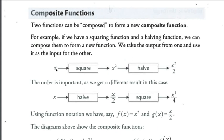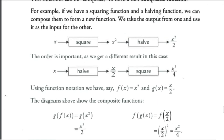We square it, then we half it. So for example, let's take three. Three squared is nine. Half of nine is nine halves or two and one quarter. So the order is important as we'll get a different result in another case.